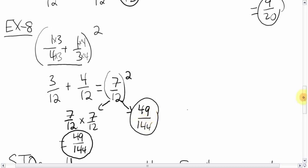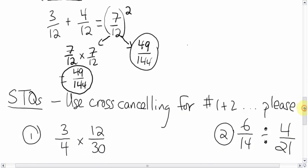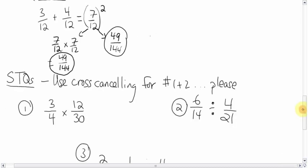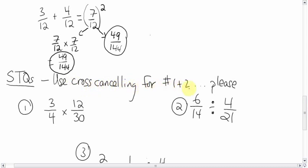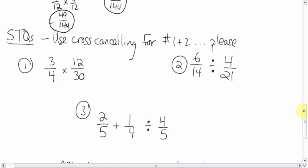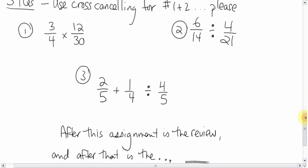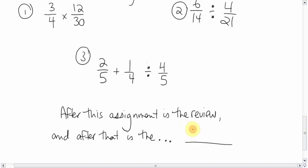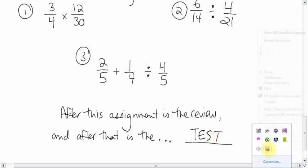Okay, so hopefully that will come in handy. And for these skill testing questions, the first two, I'd like you to use cross-cancelling. Pretty please. Actually, I'll be looking for it. So when you show it to me, I want to see the cross-cancelling steps of this and of that. And the BEDMAS question here. So those are your three skill testing questions. One last little question for you after this assignment is a review. And after that is the test. You have finished after this assignment, the fractions unit, and you're good to go. You're ready for a test. Good luck on that when you get there. Talk to you later. Bye.